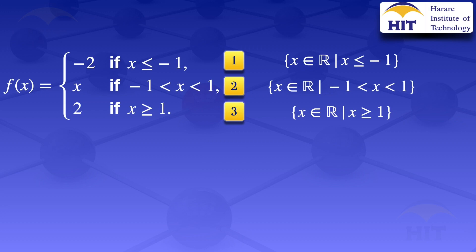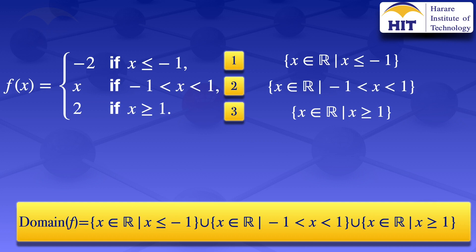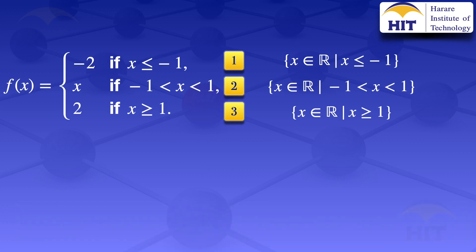Now moving on to the domain of the function f, we have found the domain of the three different parts. For the domain of f, we are just combining those three parts — they are just three sets. So the domain will be the union of those three sets. And if you look closely, the union of those three sets just gives us the set of real numbers. So the domain of this function is the set of real numbers.